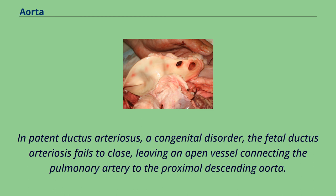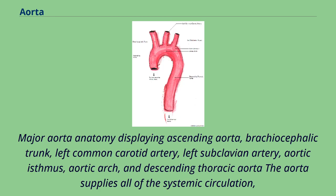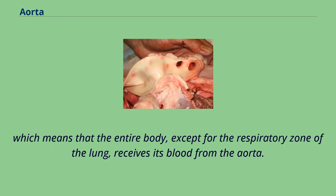Major aorta anatomy includes the ascending aorta, brachiocephalic trunk, left common carotid artery, left subclavian artery, aortic isthmus, aortic arch, and descending thoracic aorta. The aorta supplies all of the systemic circulation, which means that the entire body, except for the respiratory zone of the lung, receives its blood from the aorta.